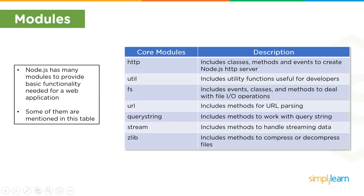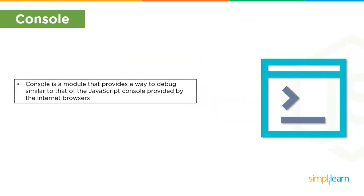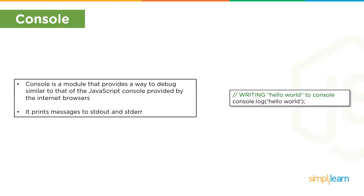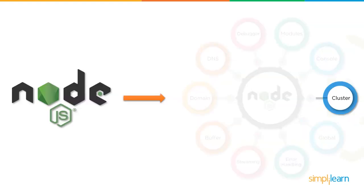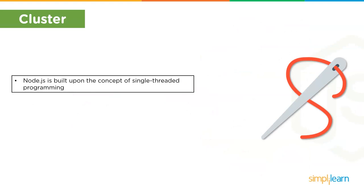Next up we have the console. The console module provides a simple debugging console similar to the JavaScript console mechanism provided by web browsers. The console can print messages to stdout for standard output messages, and to stderr to print error messages.